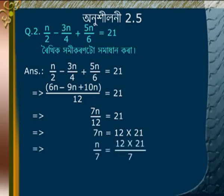Dividing both sides by 7 gives n is equal to 36. That is the answer.